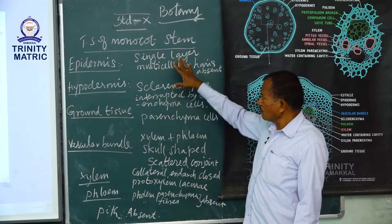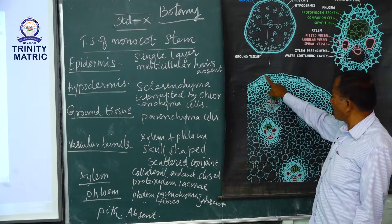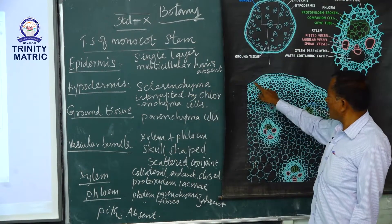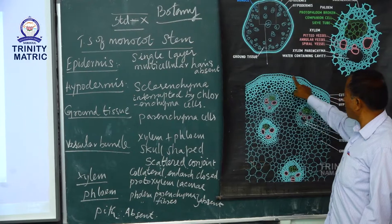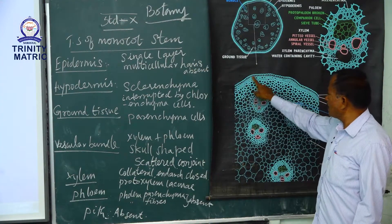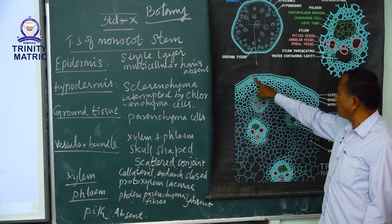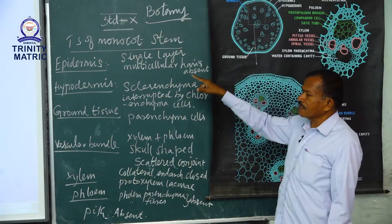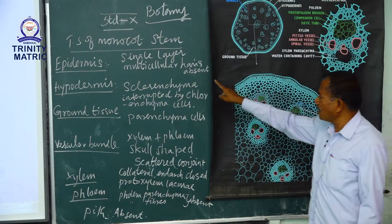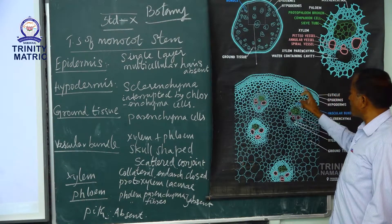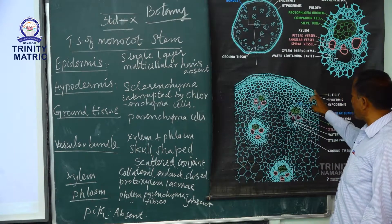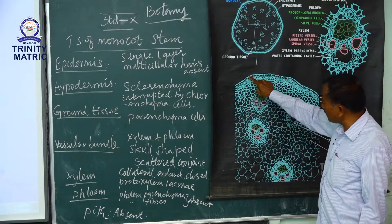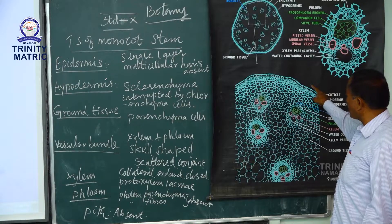First, the epidermis. The epidermis is the outermost layer of the stem. It is made up of a single layer of thin-walled parenchymatous cells. Multicellular hairs are absent — unlike the dicot stem where multicellular hairs are present. A lesser number of stomata are present here and there. The epidermis is covered by a thick cuticle, which protects the internal tissue.